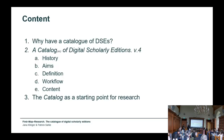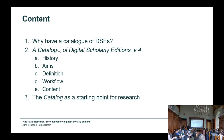What are we going to do today? First, we are going to answer the question: why have a catalogue of digital scholarly editions in the first place? Then we'll look at the fourth version of a catalogue of scholarly editions — the catalogue started by Patrick Sahle in 1997 — its history, aims, the definition used for digital scholarly editions, the workflow to discover editions, and the content of the catalogue. Then, in the third step, we'll take a glimpse at how the catalogue can be used as a starting point for further research.